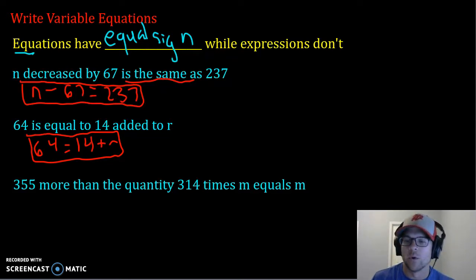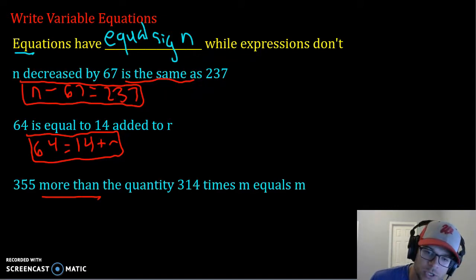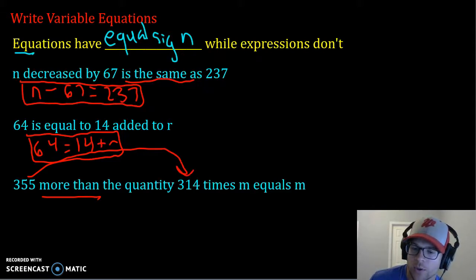And last one, 355 more than the quantity 314 times M equals M. All right. So we have our word more than, which means we're going to be switching the order of a couple things. So we're going to be switching this 355 with this whole thing.